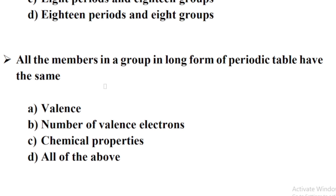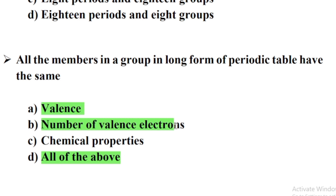All the members in a group in the long form of the periodic table have the same — Option D: All of the above. Option A: Valence. Option B: Number of valence electrons. Option C: Chemical properties.